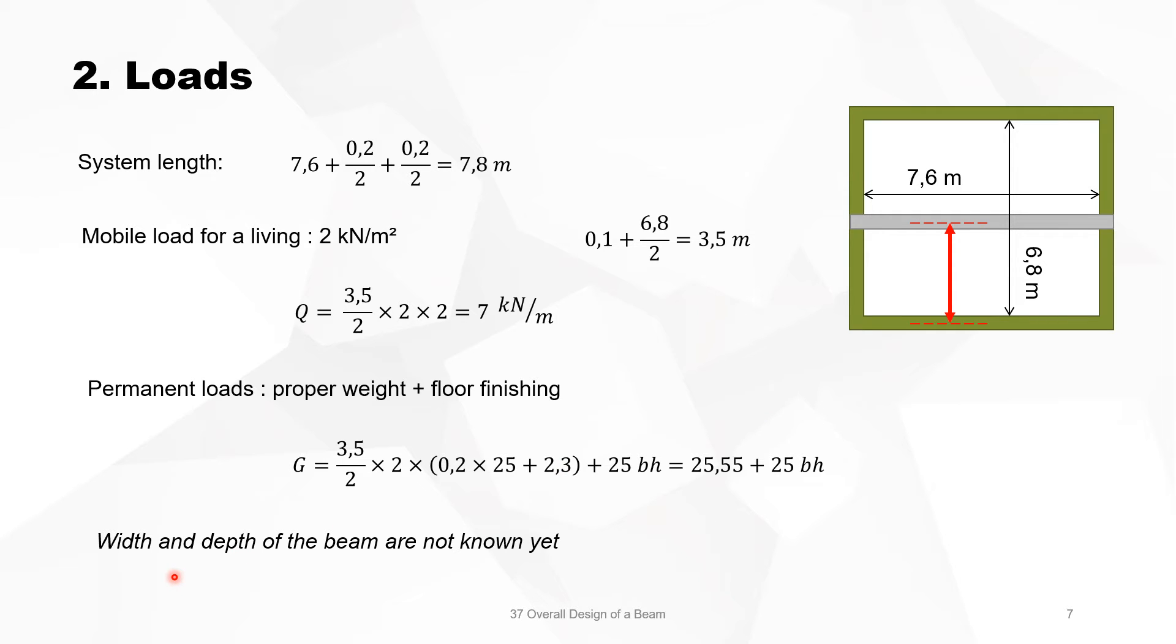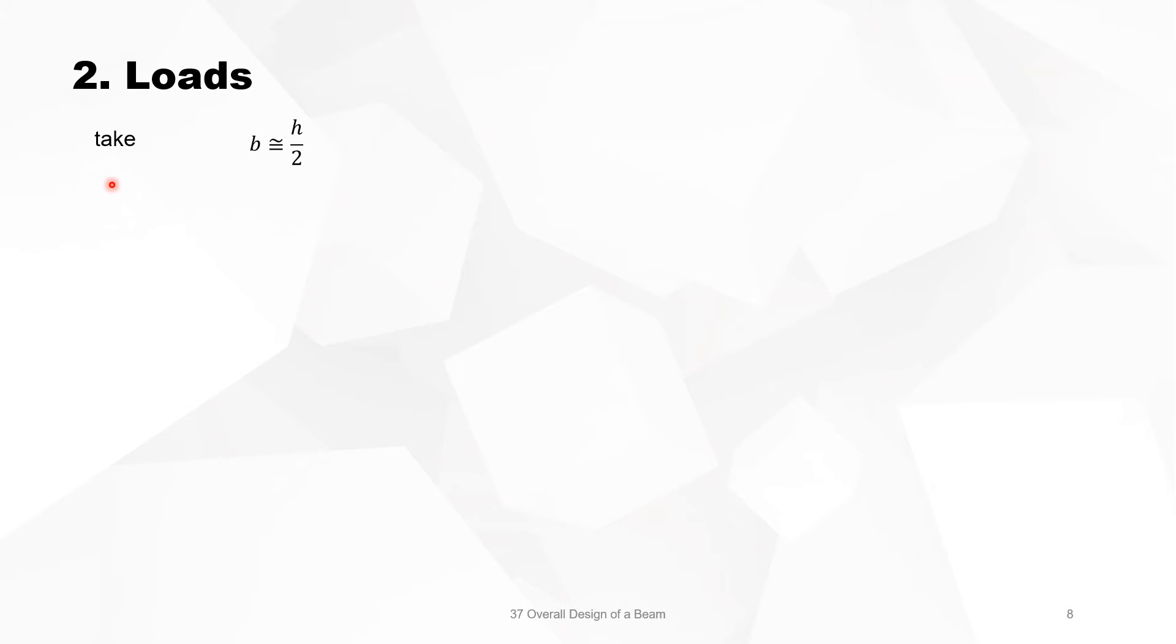Width and depth of the beam are not known yet, so we take them as B times H. Now to make any progress, we will assume that the width of the beam is half the depth, which is a recommended value. We know that the depth is given by this formula. D we will calculate for strength, C we have calculated already, this is the stirrup diameter we will calculate later on, and this is the diameter of the tension reinforcement that also we have to calculate.